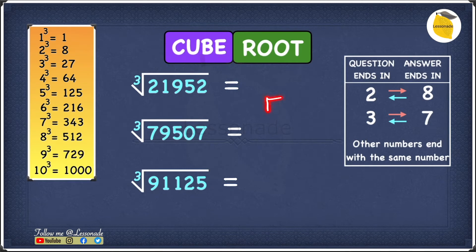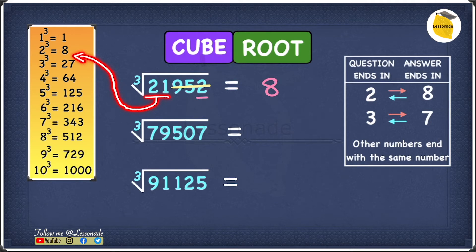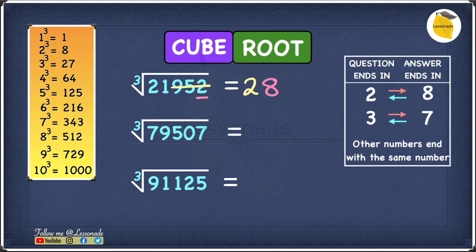Now let's have a look at finding the cube root of 5-digit numbers. Our first example is cube root of 21952. The last digit is 2, and according to the table, if the question ends in 2, our answer will end in 8. Cross out the last three digits — 9, 5, 2 — and we're left with 21. The 21 fits between 2 cubed and 3 cubed, between 8 and 27. Since 2 cubed is smaller, our answer starts with 2. So our answer is 28.